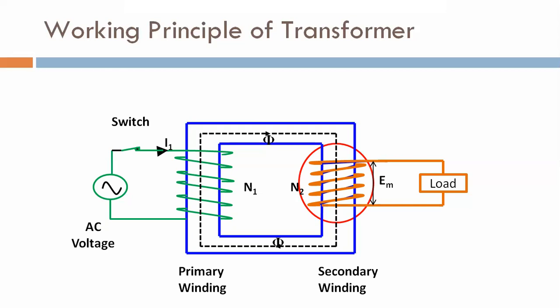That is the principle of transformer — based on Faraday's law of electromagnetic induction. So current is flowing in the secondary side. If the load is connected with the secondary winding, the current will flow and thus the power is transferred from one coil to the second coil. We can say that the power transforms from one side to another — from supply to load — and the principle of transformer is mutually induced EMF.